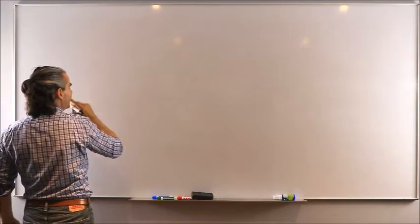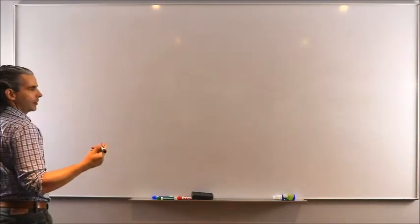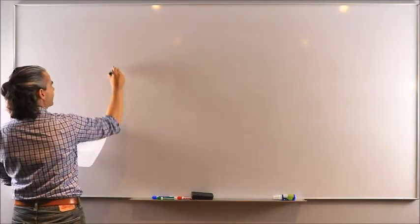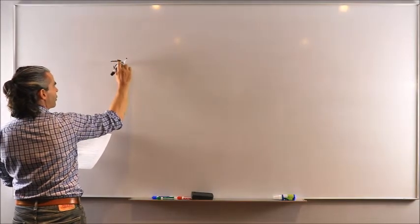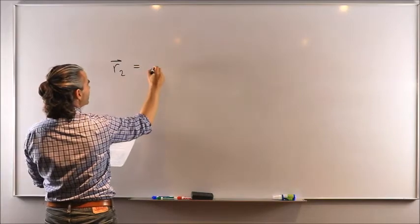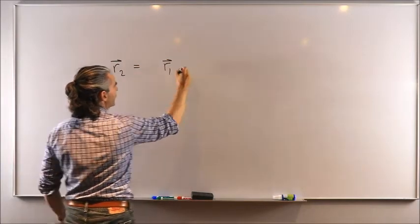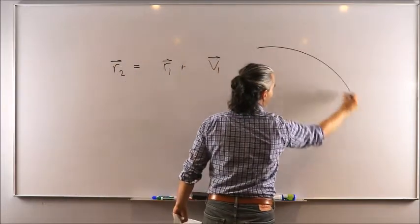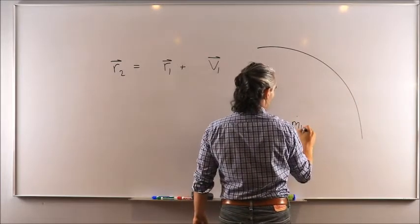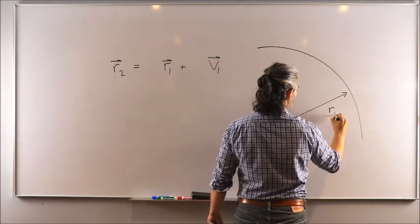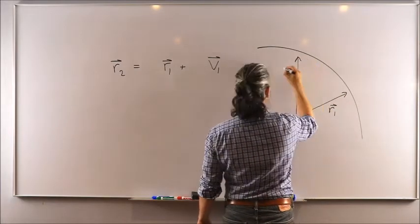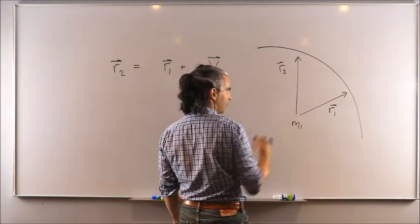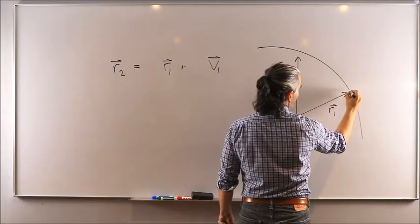Because the spacecraft's motion takes place in the orbital plane, we can write R2 as a linear combination of R1 and V1. If we have R1 and R2 as two measurements, and the spacecraft at t1 had velocity V1, then those three vectors are coplanar. We can scale R1 by factor f and V1 by factor g to combine them and obtain R2.